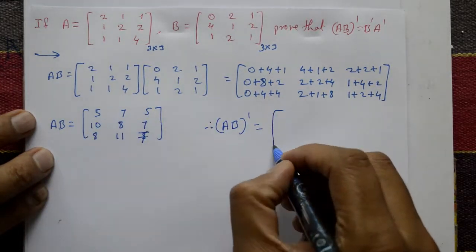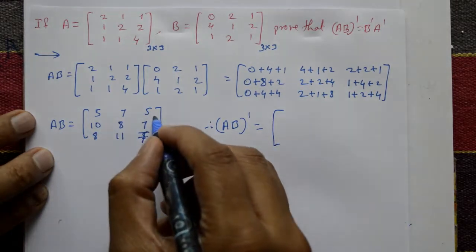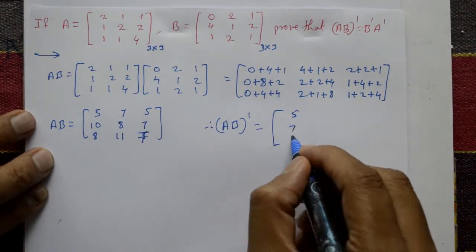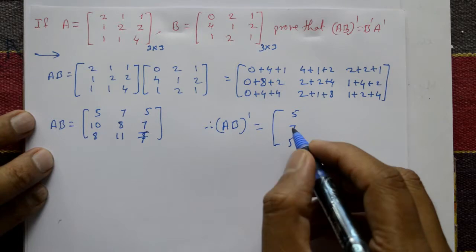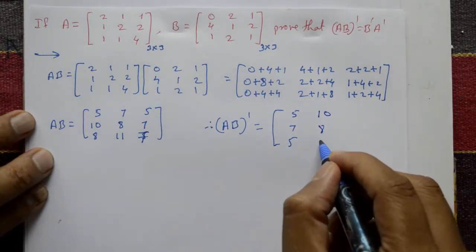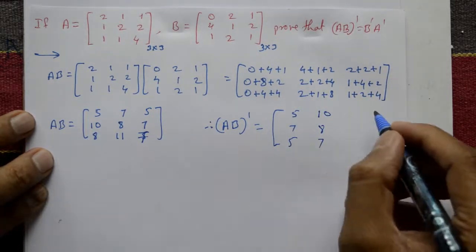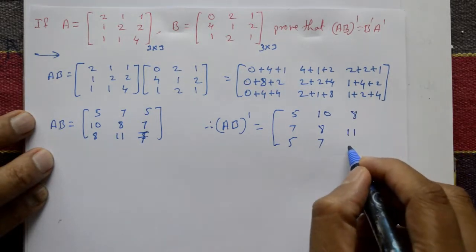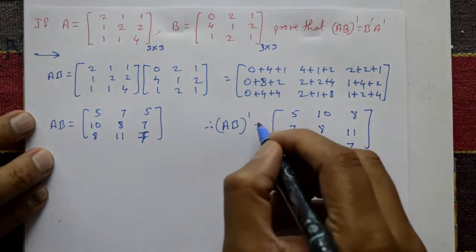Write A into B, then transpose — row into column, or column into row. Write row-wise values in column-wise order. First row becomes first column: 5, 7, 5. Second row becomes second column: 10, 8, 7. Third row becomes third column: 8, 11, 7. This is A into B whole dash — the transpose of matrix AB.